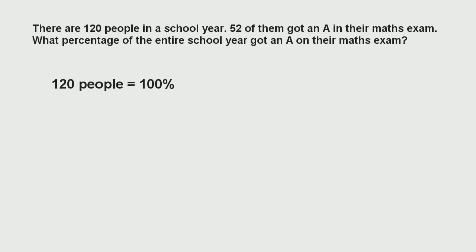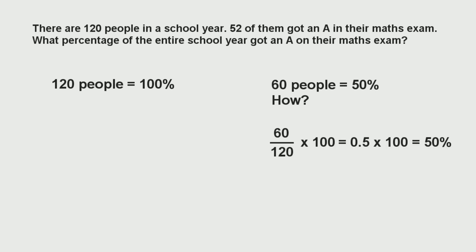We need to find what percentage those 52 people are out of the 120. Before we look into this, let's consider a slightly different example. Half of 120 is 60, which is 50%. How do we get the value of 50% from that? We divide the value by the total, then times by 100. So 60 out of 120 is the same as 1 over 2, which is 0.5 as a decimal. Times by 100, we get 50%.